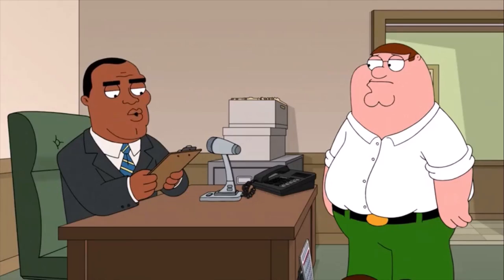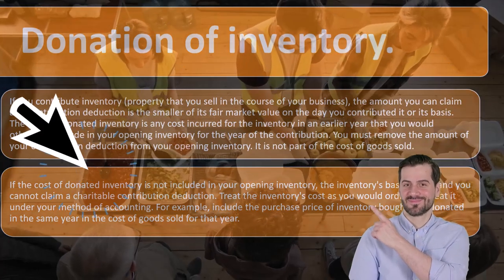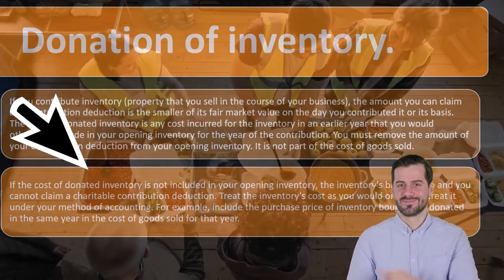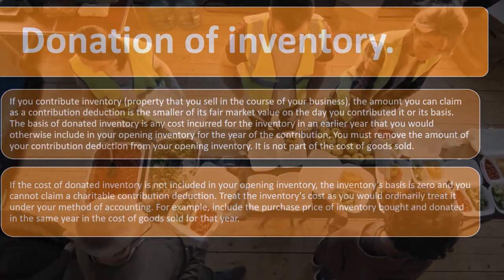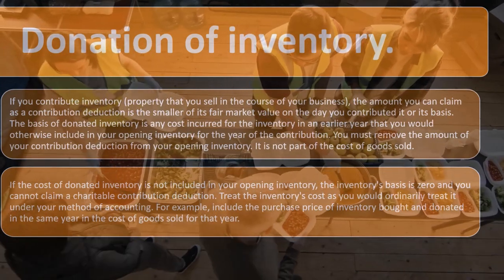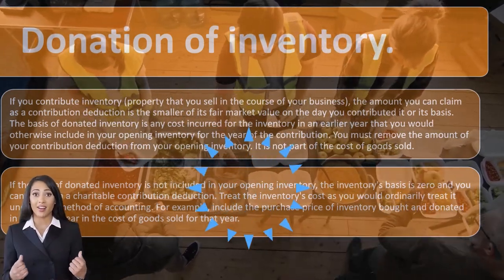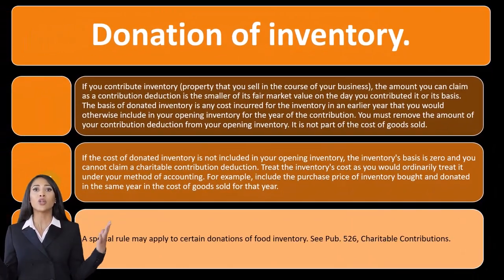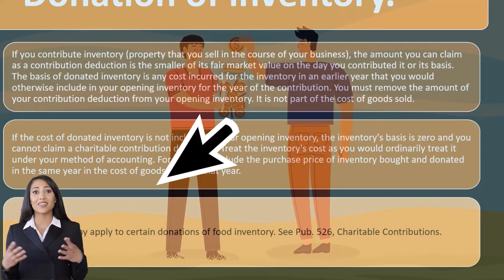If the cost of donated inventory is not included in your opening inventory, the inventory's basis is zero and you cannot claim a charitable contribution deduction. Treat the inventory's cost as you would ordinarily treat it under your method of accounting — for example, include the purchase price of inventory bought and donated in the same year in the cost of goods sold for that year. A special rule may apply to certain donations of food inventory.